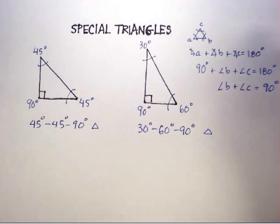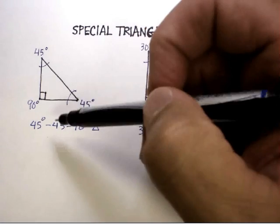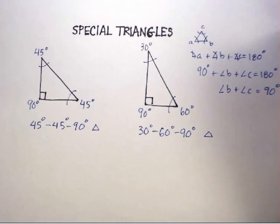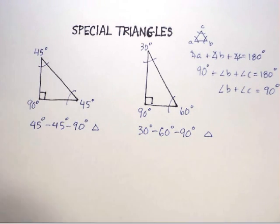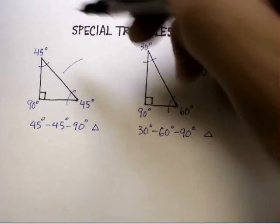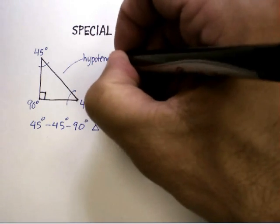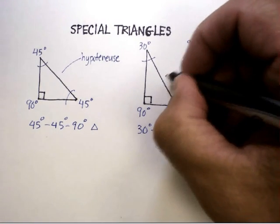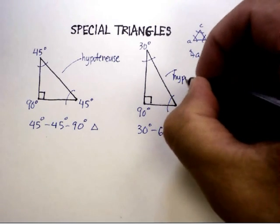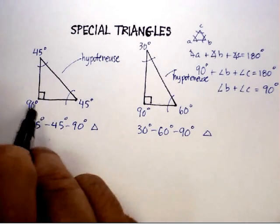Why are these important? They actually show up quite a bit in our world. What we've done is memorized the proportions — the lengths of each side of these triangles. For the 45-45-90 triangle, the side opposite the 90 degree angle is called the hypotenuse. The sides adjacent to the 90 degree angle are called the legs.